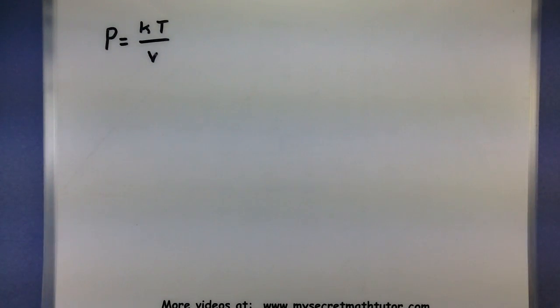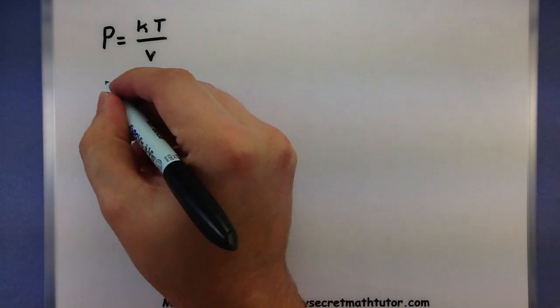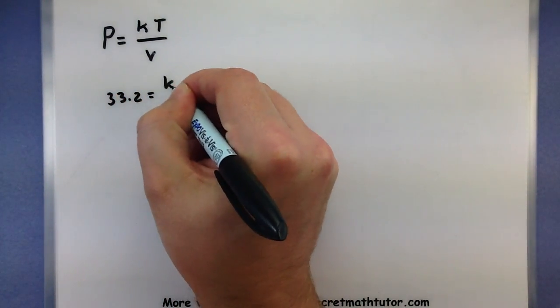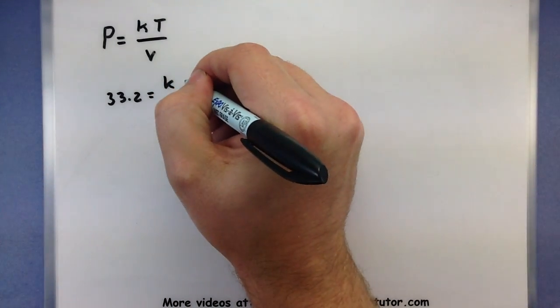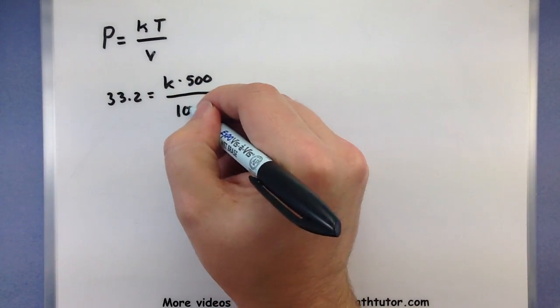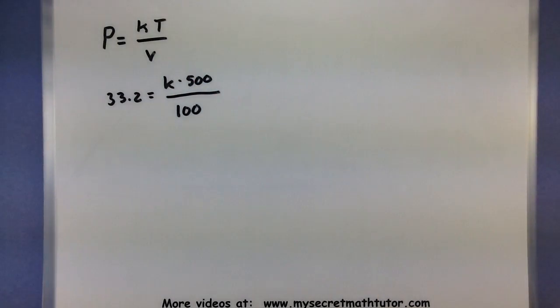So I've already copied down the formula, and let's go ahead and put in those values. So we know the pressure. I don't know the k value just yet. We are at 500 Kelvin all over 100 liters.